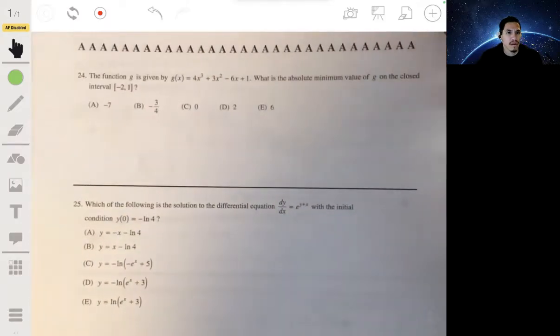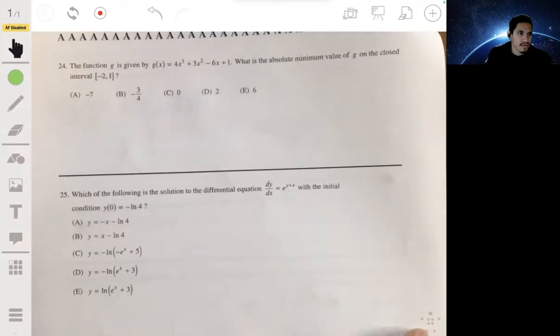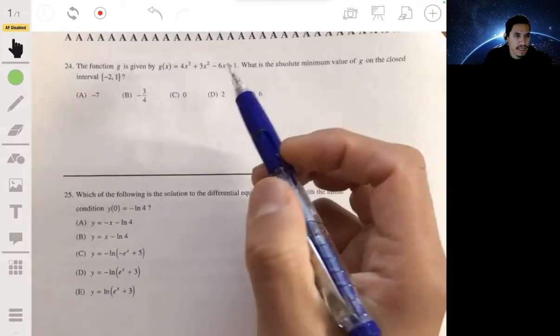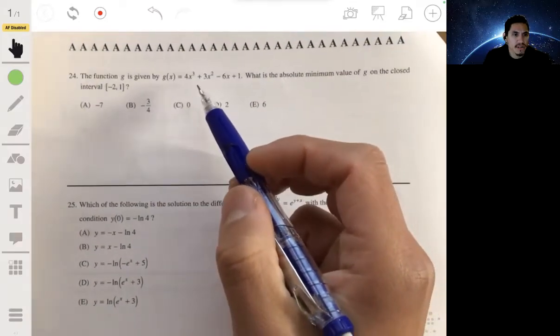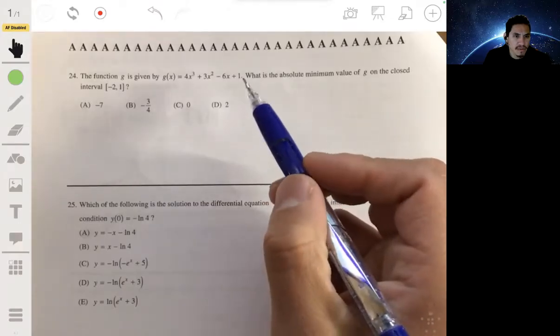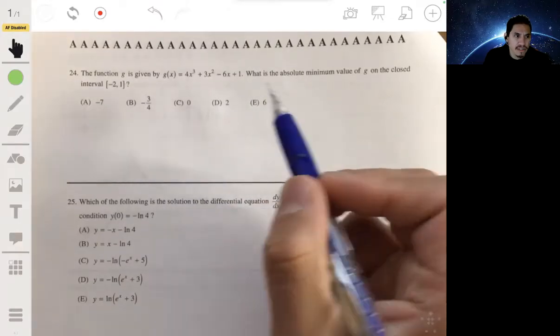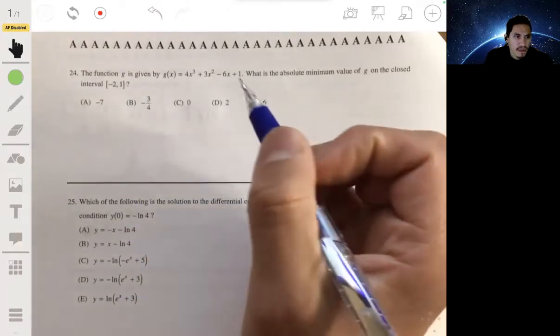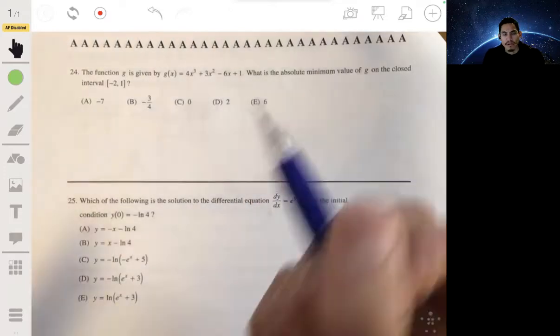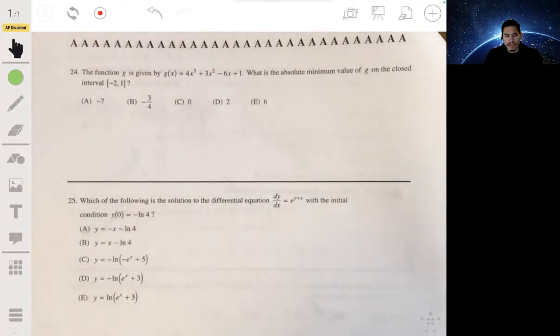Problem 24. The function g is given by g of x equals 4x cubed plus 3x squared minus 6x plus 1. What's the minimum value of g on the closed interval negative 2 to 1?